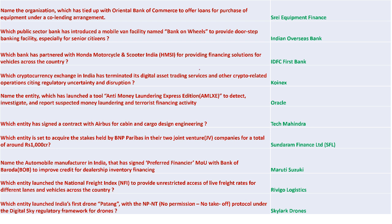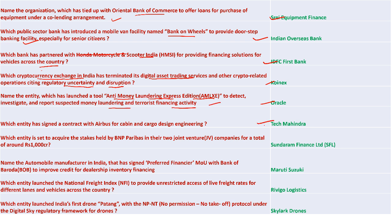Tray Equipment Finance tied up with OBC Bank to offer loans for purchase of equipment under a co-lending agreement. Indian Overseas Bank started a mobile van facility called Bank on Wheels for door-to-door banking. IDFC First Bank partnered with Honda Motorcycle and Scooter for providing financing solutions across the country. CoinX, a cryptocurrency exchange, terminated its digital asset trading service citing regulatory uncertainty. Oracle launched a tool called Anti-Money Laundering Express Edition to detect and report suspected money laundering and terrorist financing.